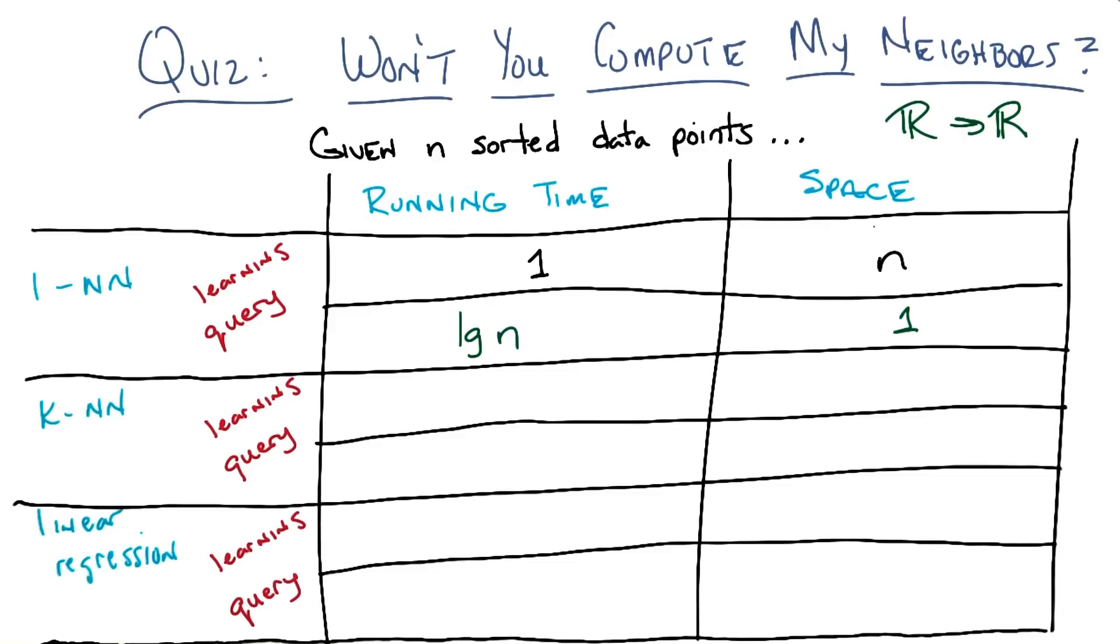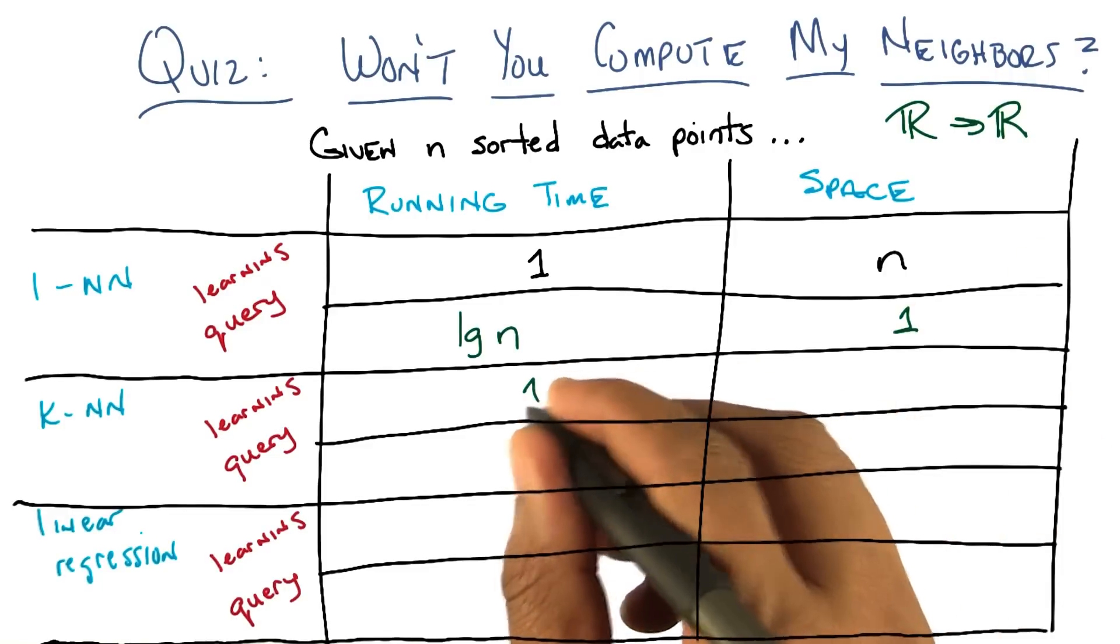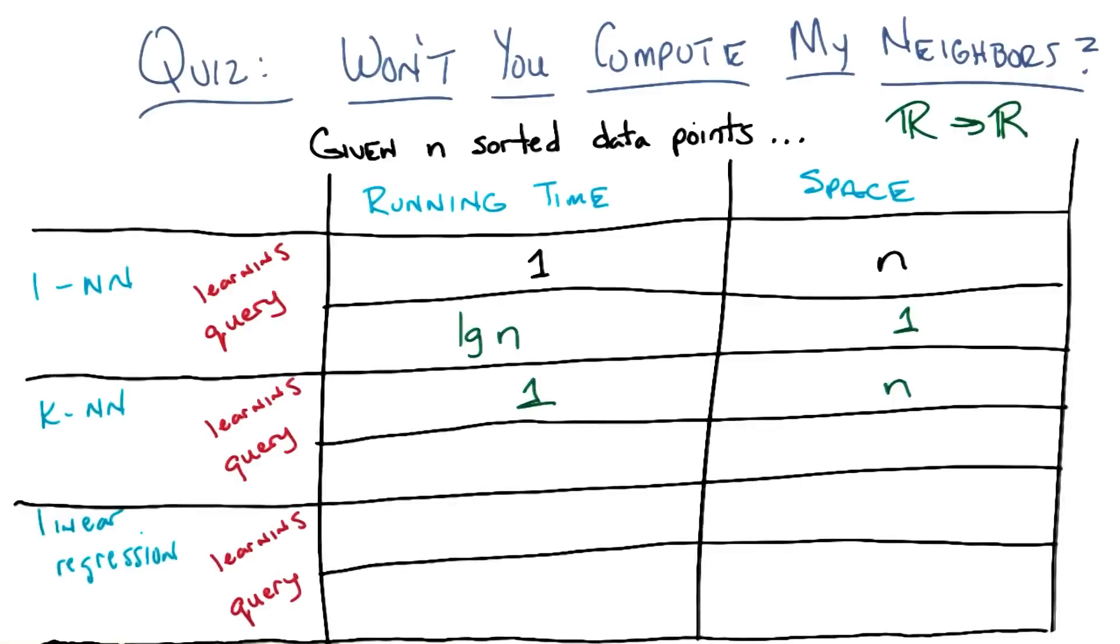All right, K and N. So K and N. So the training process, the learning process is exactly the same as it is for one nearest neighbor, which is to say you do nothing and you pass all the data forward to the query processor. So it's going to be one N. That is correct. Nice. All right, now querying seems like it's a little more subtle.